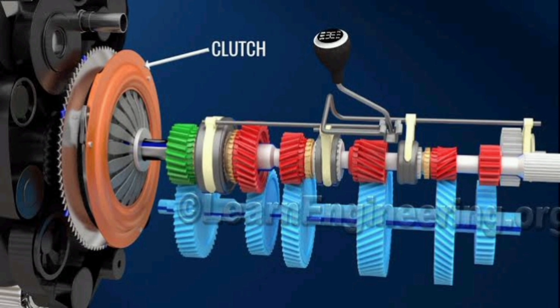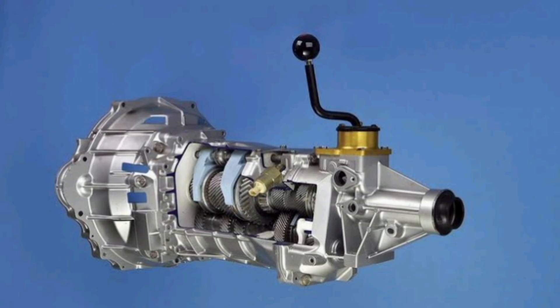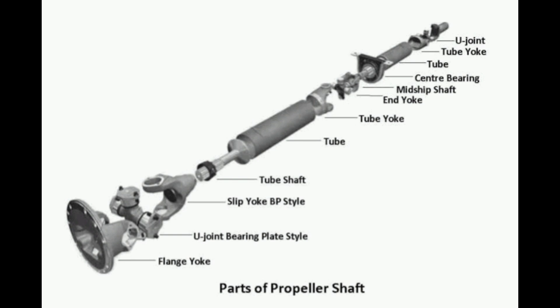The gearbox comprises pairs of gear wheels. It efficiently transmits motion from the crankshaft through the clutch at varying speeds. This variation in speed provides the necessary leverage between the engine and the road wheels, making it adaptable to different driving conditions and requirements.